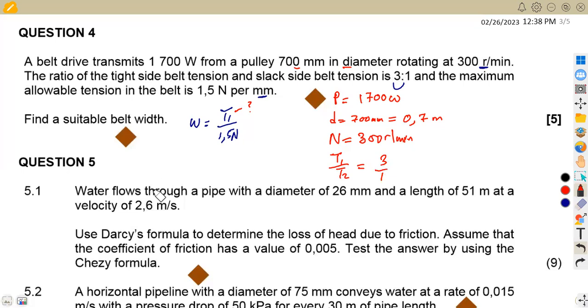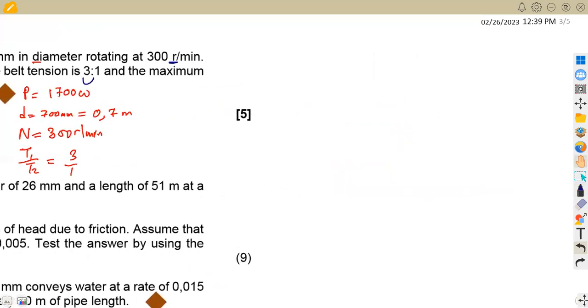So using this information, in order for us to find T1, we can play around with the information that we have. We know that power is the equivalent of the effective tension times the velocity. We do not have the velocity, we do not have the total tension, but we know that this total tension is T1 minus T2 times the velocity. So that means we can calculate velocity from this information. We know that velocity is equivalent to pi Dn over 60, which is the diameter and the revs per minute.